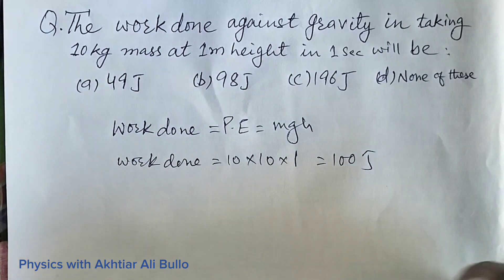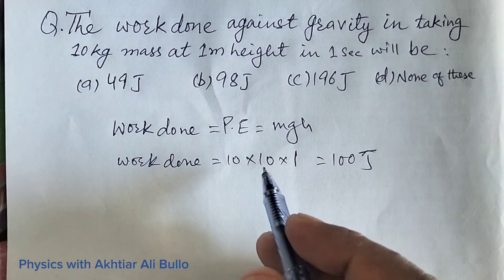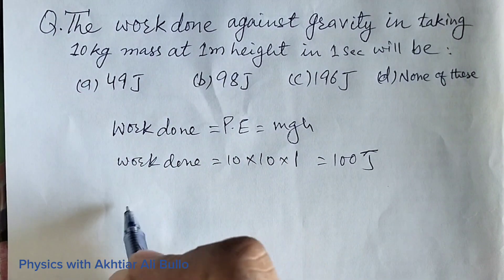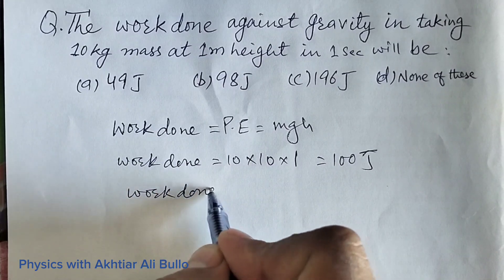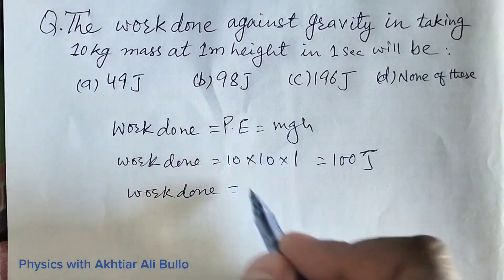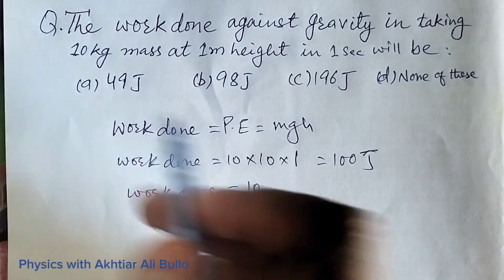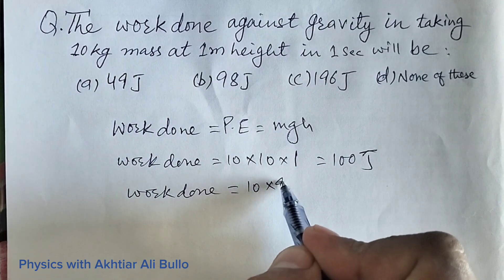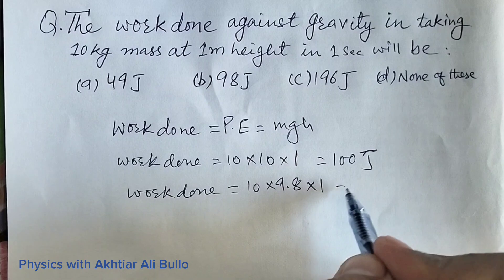Or we can also find it as: work done will be equal to 10, means mass is 10 kg, and we will take the value of g as 9.8 and height is 1 meter, so it will be 98 Joule.